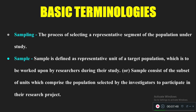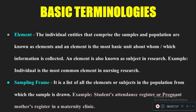In that sample of 1,000, each and every person is called an element or subject. These elements, in nursing research, are mostly human beings — that may be a patient, a student, or people in the community. Human beings are the elements in nursing research.